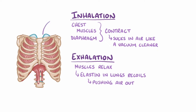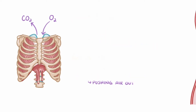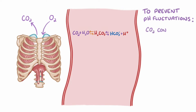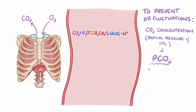Ultimately the lungs need to pull oxygen into the body and get rid of carbon dioxide. Carbon dioxide binds to water in the blood and forms carbonic acid, which then dissociates into hydrogen ions and bicarbonate ions. So in order to prevent pH fluctuations, the carbon dioxide concentration, or the partial pressure of carbon dioxide called pCO2, needs to be kept within a fairly narrow range. For this reason, the lungs maintain the ventilation rate they need to get rid of carbon dioxide at the same rate that it's created by the tissues.